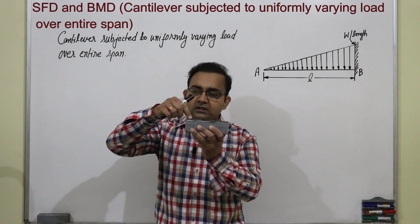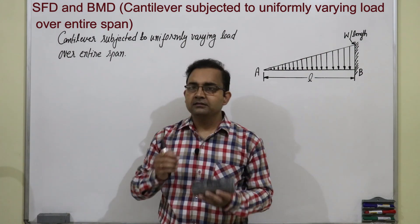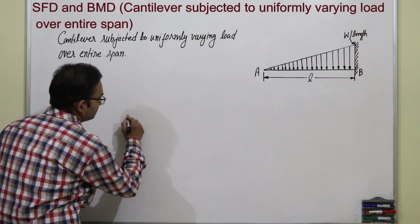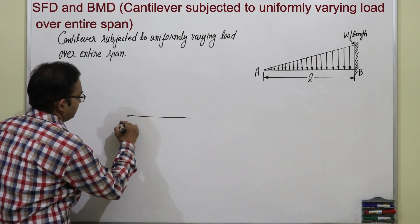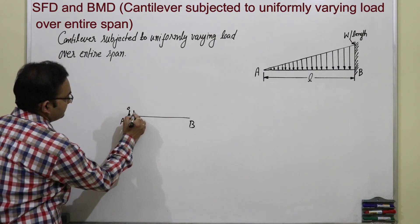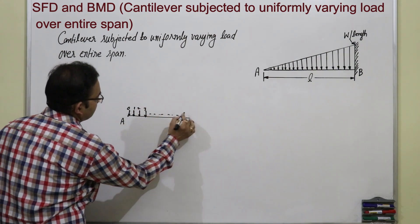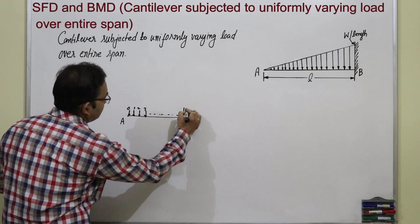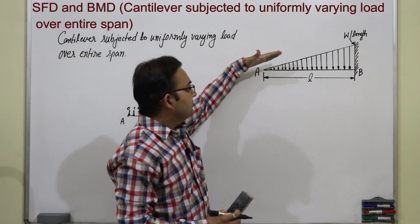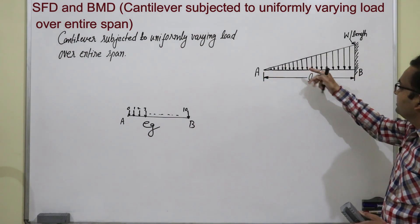Now we will understand the meaning of uniformly varying load. This is a duster and suppose at this point load is 0, and when we go to this side, load is increasing — 0, 1, 2, 3... up to 10 like this. So it is a uniformly varying load. Here load is 0 at point A and it is increasing to 10 towards B. We are showing this varying load as a slope: here load is 0 and it is increasing along this length.